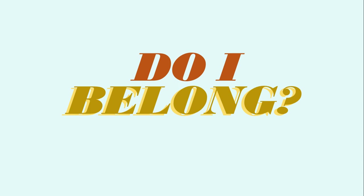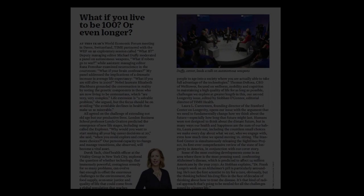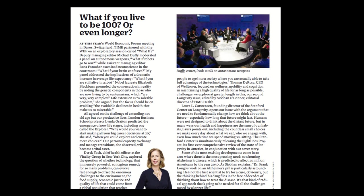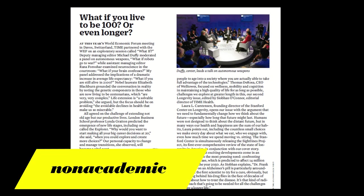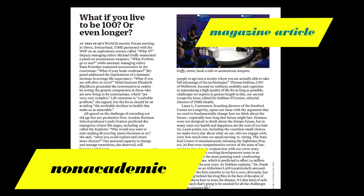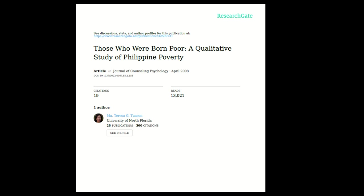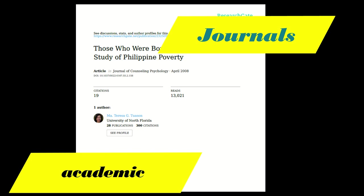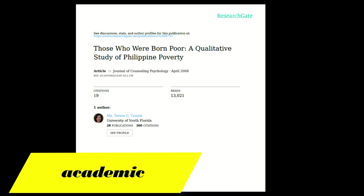Now let's play a game — pause the video as you play along and resume when you're done. Identify whether the following texts are academic or non-academic and what type of text each one is. The first example is a non-academic text — specifically a magazine article. The second is an academic text — an example of a journal.